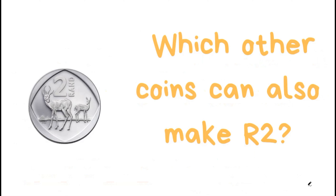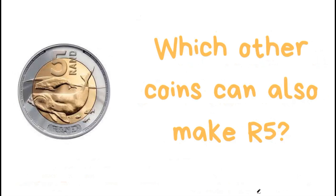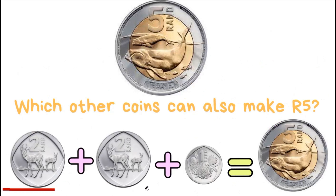Which other coins can also make 2 rand? 1 rand plus 1 rand will give us 2 rand. Which other coins can also make 5 rand? 2 rand plus 2 rand plus 1 rand will give us 5 rand.